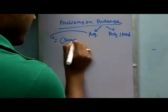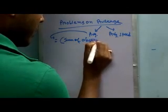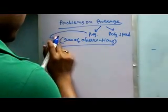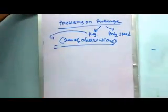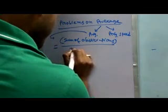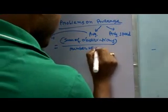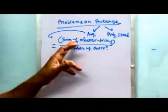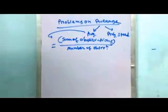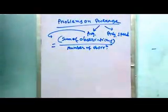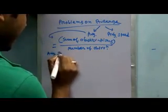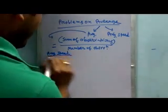Normal average equals sum of observations by number of observations. This is generally called the average of that particular set of numbers.